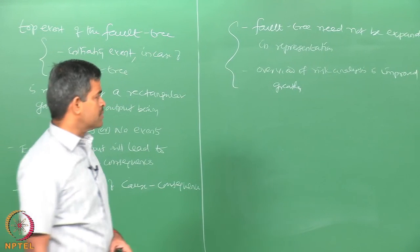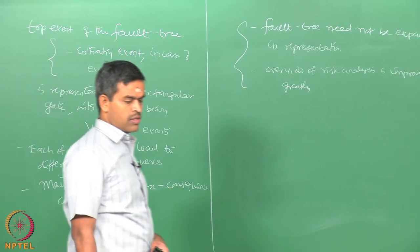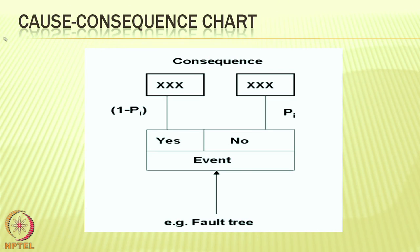A typical cause-consequence chart is now shown on the screen. One can see the consequences which have series and parallel events — that is p_i and 1 minus p_i — depending upon what kind of element you are looking at. The output will lead to yes or no variables, and ultimately it will come to an event which can be an example event of a fault tree.